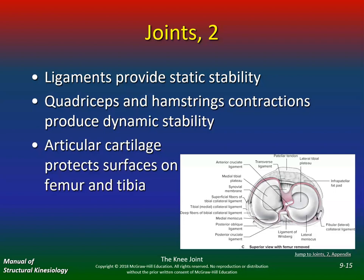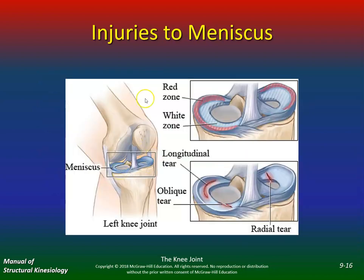Articular cartilage protects surfaces on the femur and tibia. Here are the injuries to the meniscus — a couple of you have actually torn your meniscus. Unfortunately, because the blood supply is very poor, you really can't heal. Once you have a tear, that's it. There's an oblique tear, a longitudinal tear, a radial tear. Injuries to the red zone are not as dangerous as injuries to the white zone, where unfortunately they don't heal. The outer third has a little bit of blood supply, whereas the inner two-thirds does not.